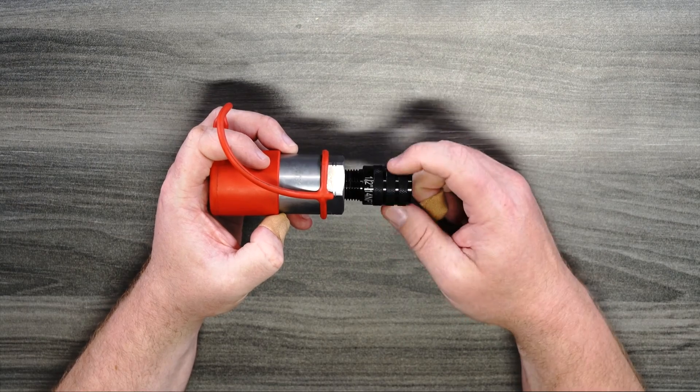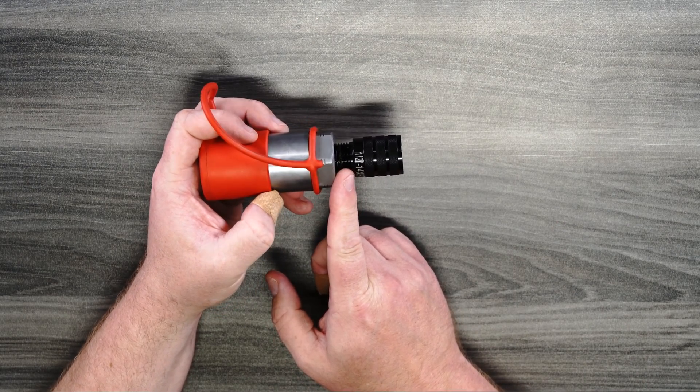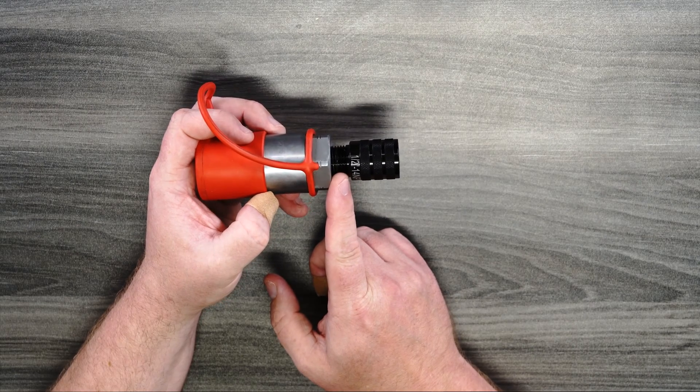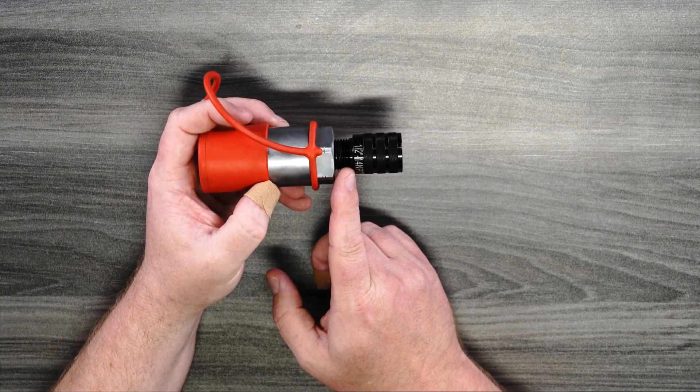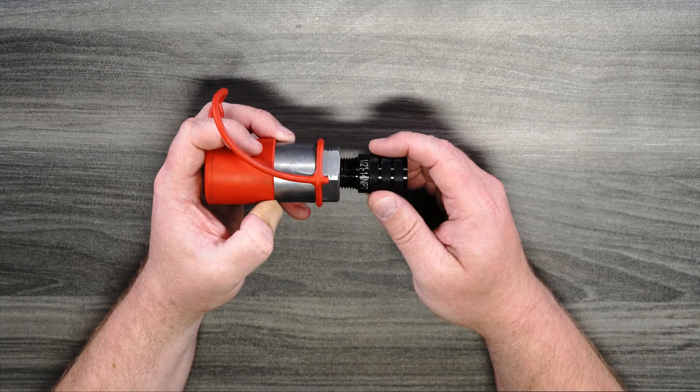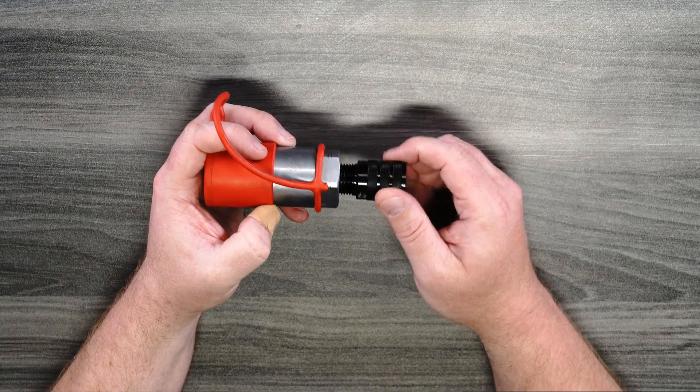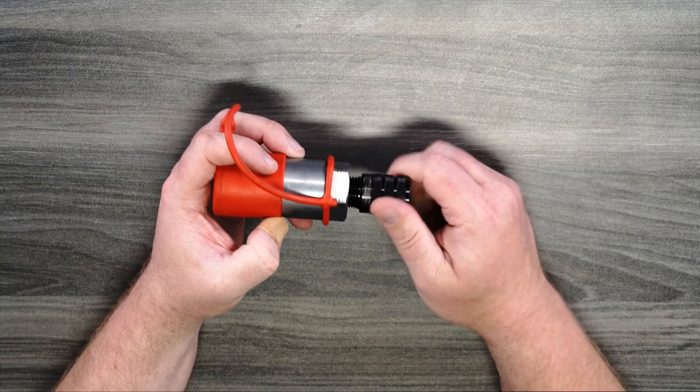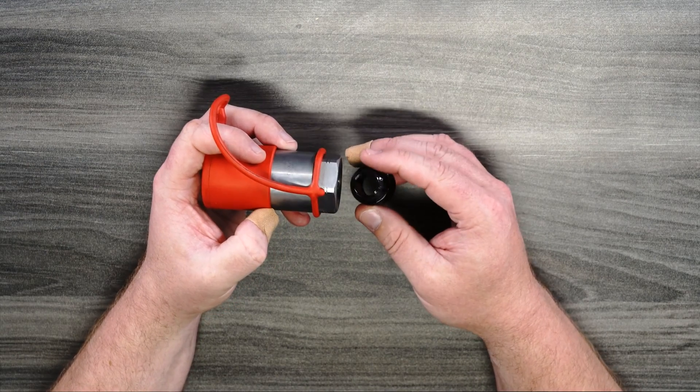So the neat thing about these adapters is they do have the thread pitch as well as how many threads per inch are on this adapter. So we're looking at half inch dash 14 NPT. That's telling us it's a half inch diameter hole. We got 14 threads per inch and it's national pipe thread. So we've properly identified the thread on this coupling and we know that it's half inch NPT.